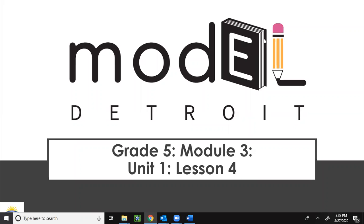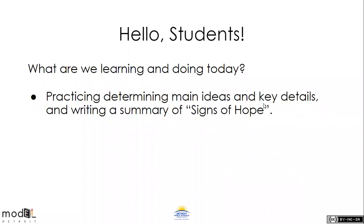Good morning, fifth graders! Today we are going to work on Unit One, Lesson Four. Yesterday you should have finished writing your summaries, gotten some feedback from myself or another teacher, and hopefully you are on the right page. Today we will work on practicing those skills again. We're practicing determining main ideas and key details and writing a summary of Signs of Hope.